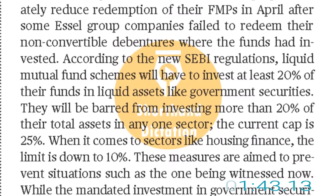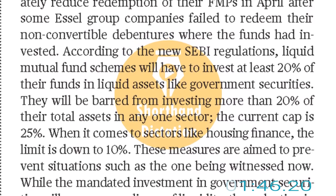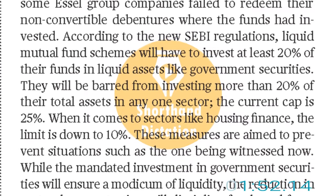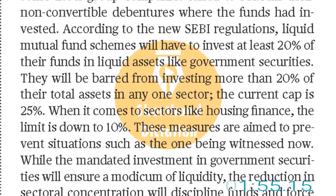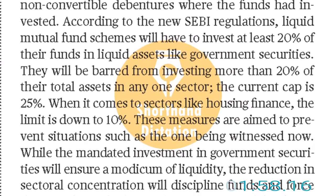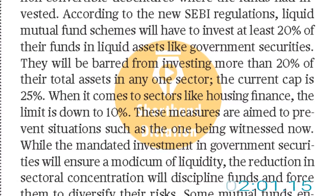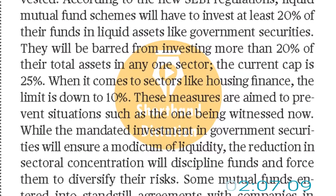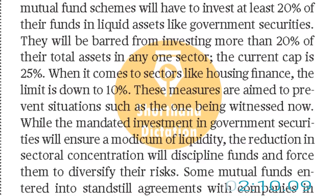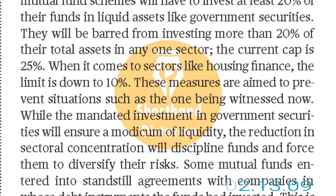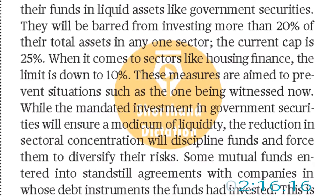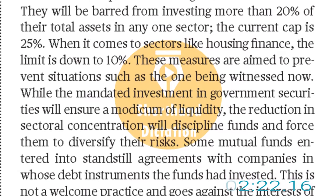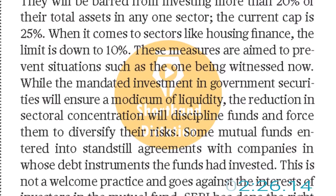When it comes to sectors like housing finance, the limit is down to 10%. These measures are aimed to prevent situations such as the one being witnessed now. While the mandated investment in government securities will ensure a modicum of liquidity, the reduction in sectoral concentration will discipline funds and force them to diversify their risk.